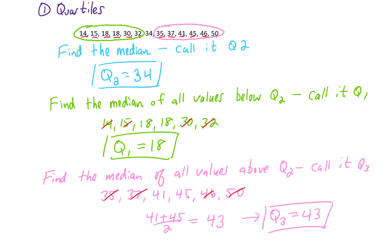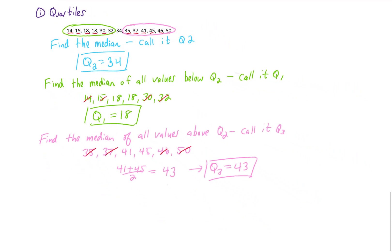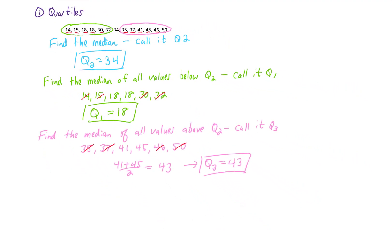So we found our three quartiles. If we place all of our data on a number line and put our three quartiles in, you'll notice that those three quartiles divide all of our data into four pieces. We have our smallest data value at the bottom and our largest data value at the top.